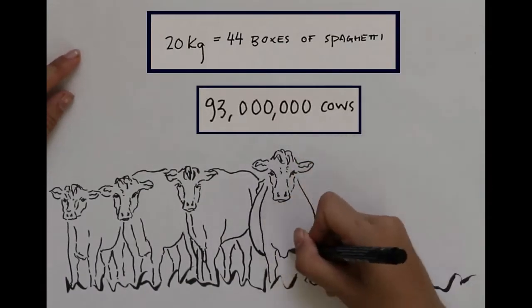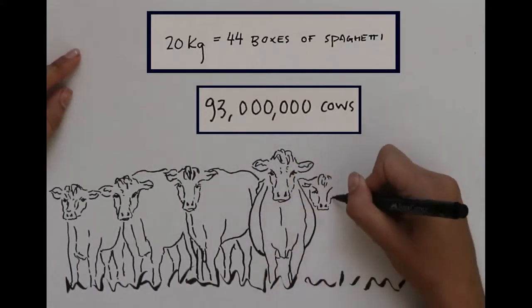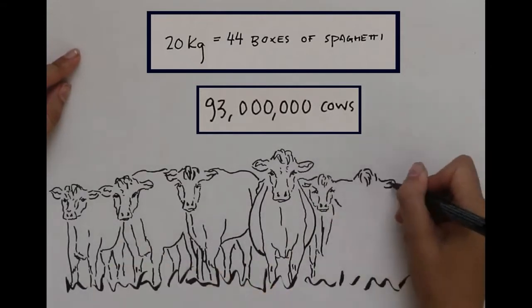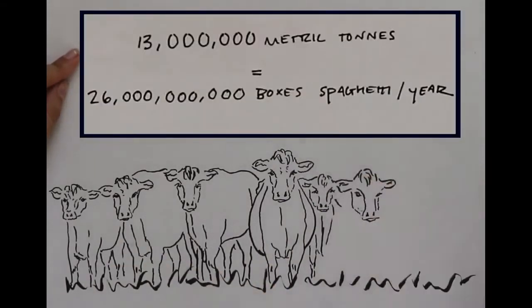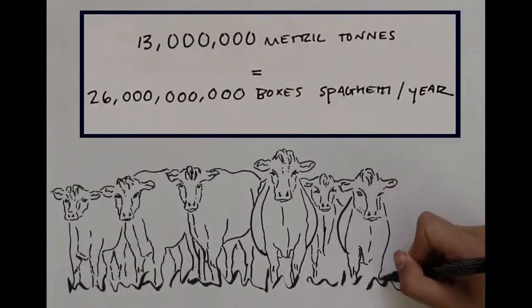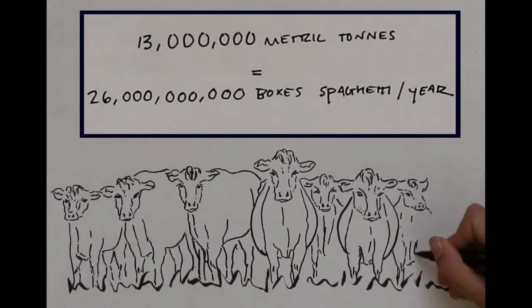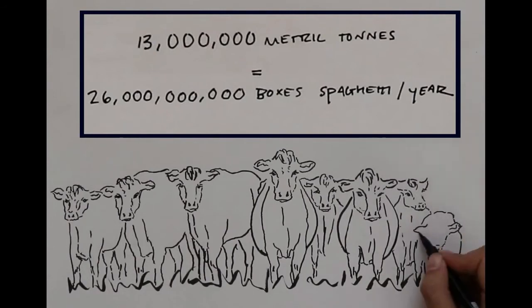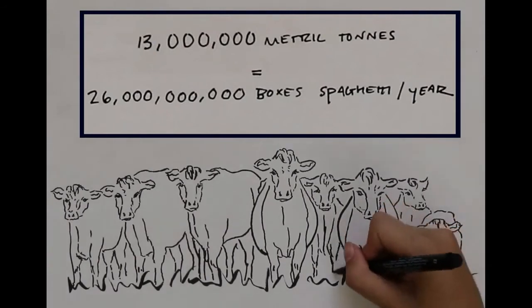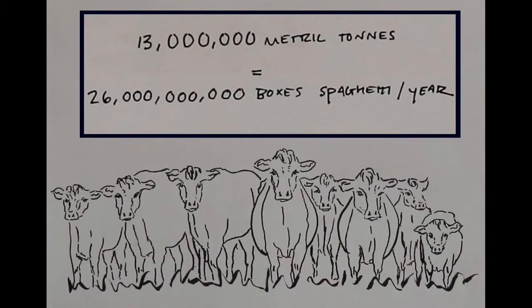If we want to replace 2% of their dry food with a supplement, we would need about 13 million metric tons of algae every year, which amounts to more than 26 billion boxes of spaghetti. That's more than double the annual global harvest of seaweed, and that estimate doesn't include the 1.3 billion cows living outside the US.